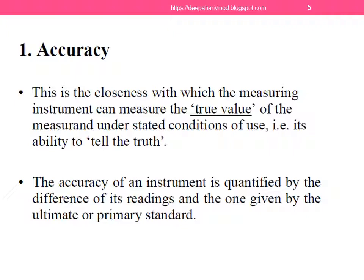Coming to accuracy, this is the closeness with which the measuring instrument can measure the true value of the measurement under stated conditions of use, that is, its ability to tell the truth. It is the closeness with which an instrument can read the true or actual value of the quantity being measured. The accuracy of an instrument is quantified by the difference of its readings and the one given by the ultimate or primary standard.